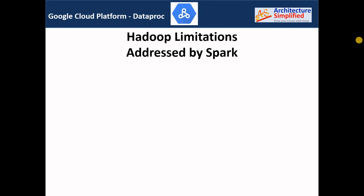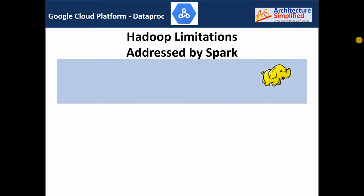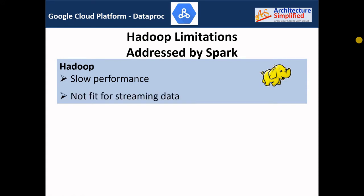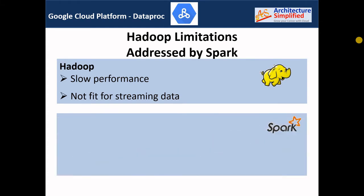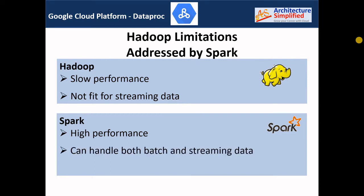Now let's understand some of the limitations of Hadoop which were addressed by Spark. In Hadoop, the MapReduce which processes data is slow, and Hadoop is also not fit for streaming data processing. Spark came into picture and processes data in memory, making it 100 times faster compared to Hadoop. Spark also handles both batch and streaming data, but it is expensive.